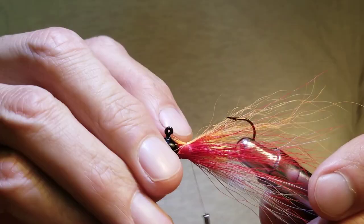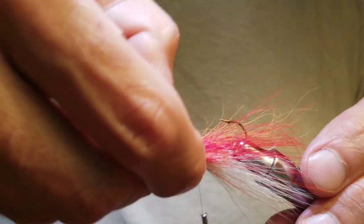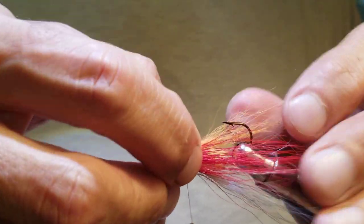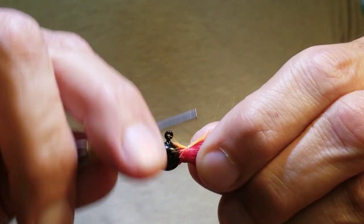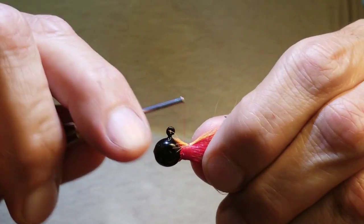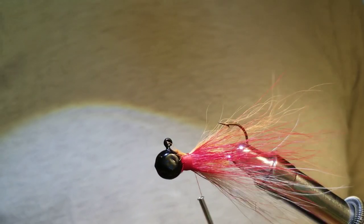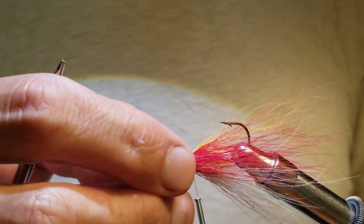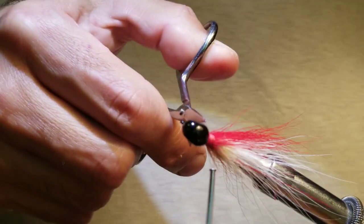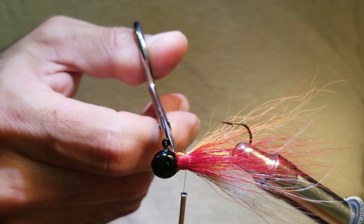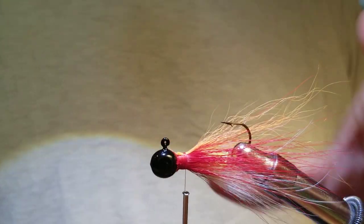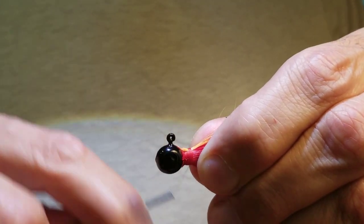Trickiest part sometimes is positioning this stuff. What I like to do—what I like to do, I sometimes cheat a little bit and trim it as close as possible, but then trim the edge off that way, okay, so it doesn't interfere with the wraps.